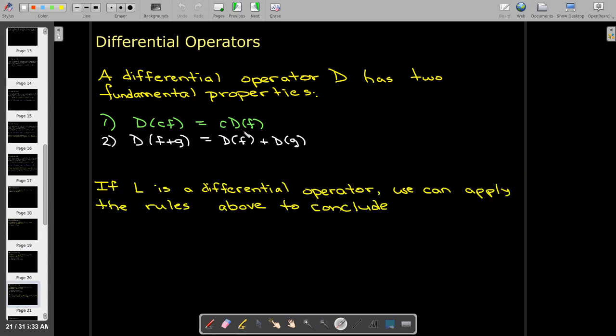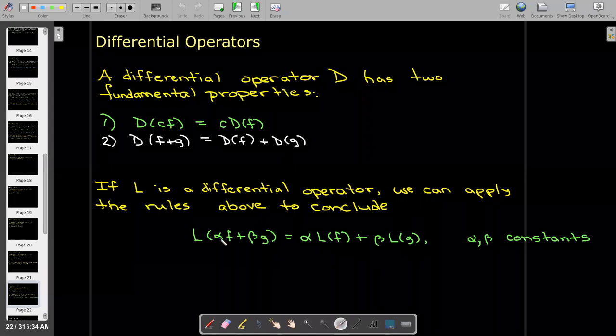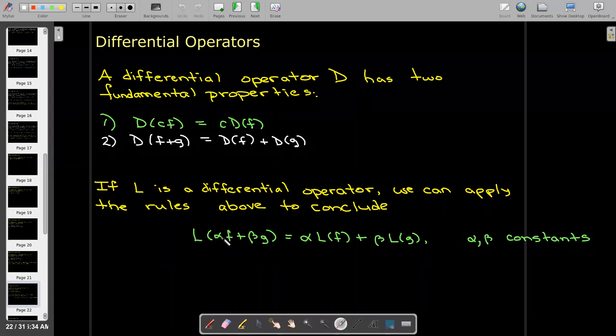And so we can summarize that by saying, if I take alpha f plus beta g, use that as my input to L, I can break that down by factoring out the constants and breaking up the sum into two applications of the operator L. Here, alpha and beta are constants.